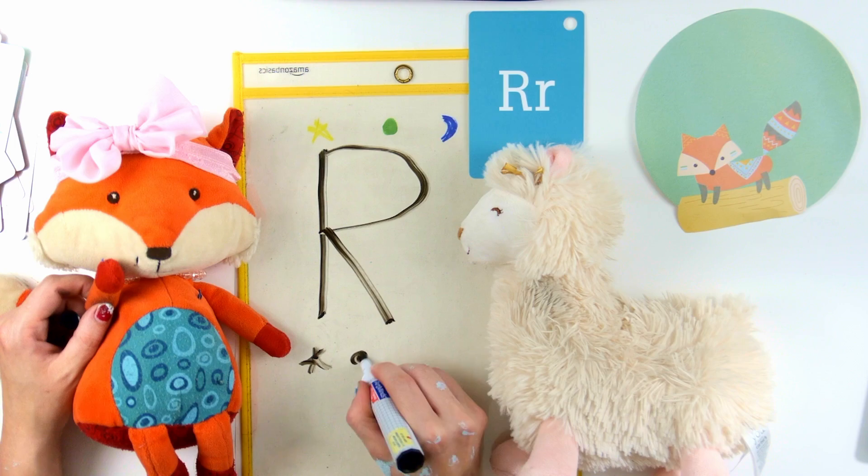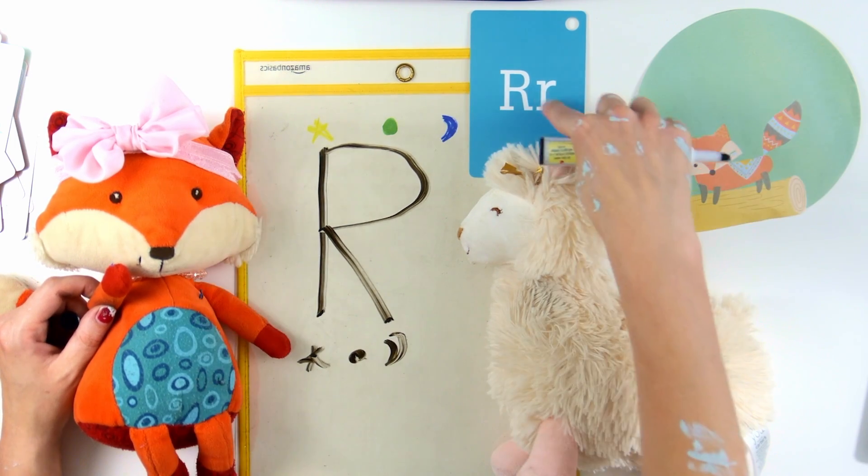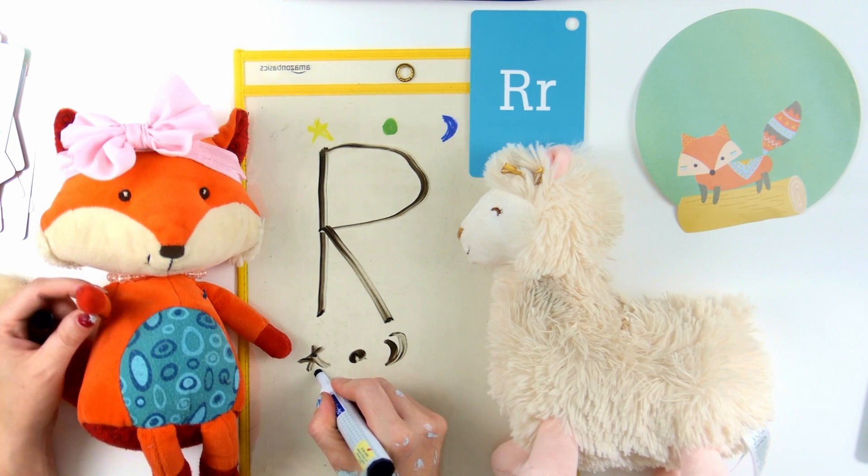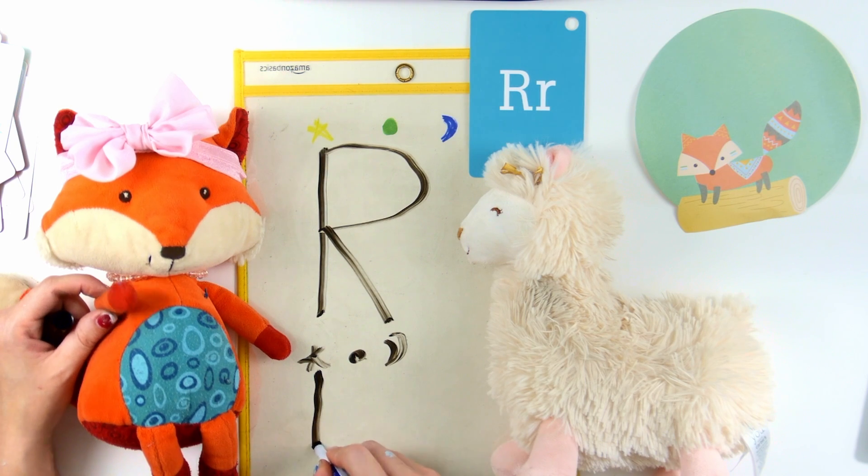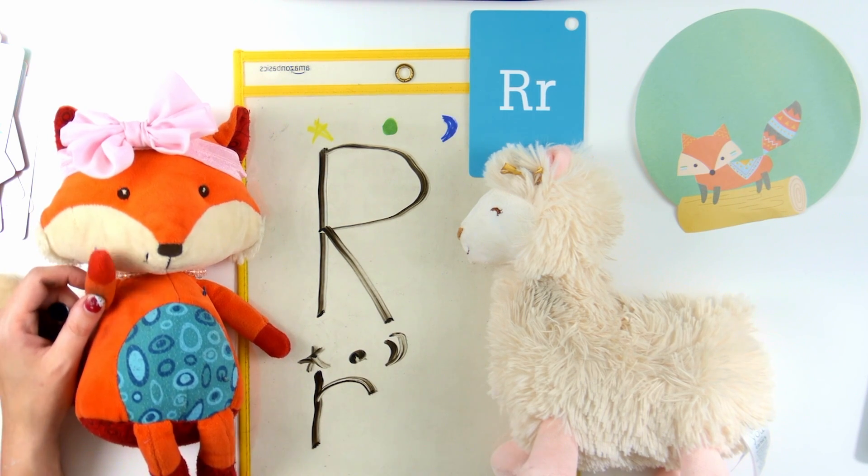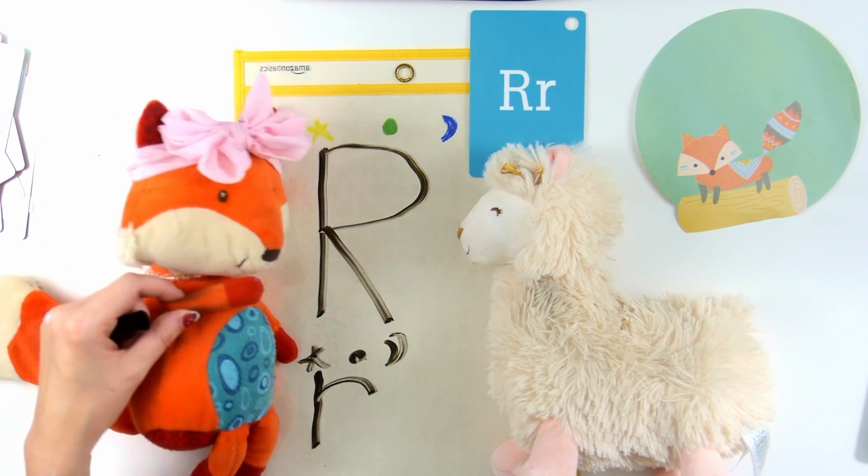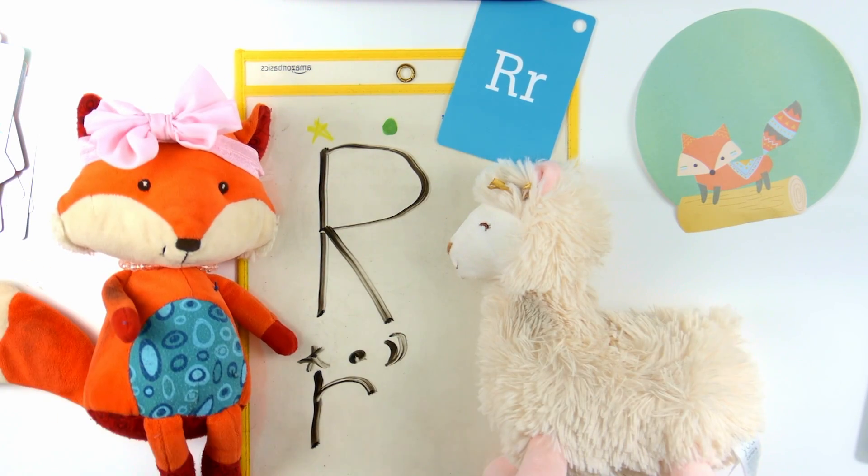And then for our lowercase R, we're going to make a star, planet Earth and a moon. And we're going to start at the star. Start at the star! Go down the ladder. Down the ladder! And a little rainbow. Little rainbow! And R says R!